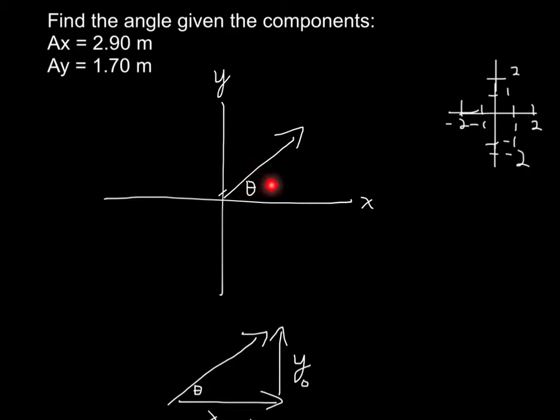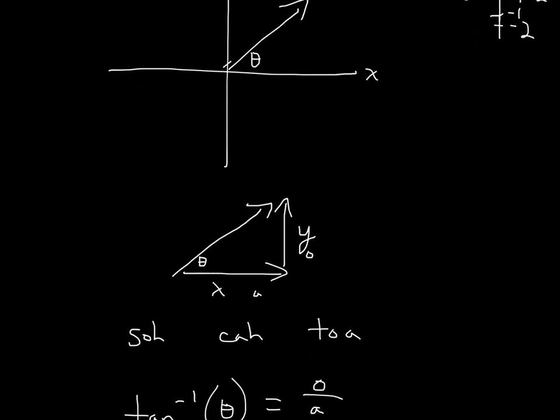So to find this angle, what we can do is we can use trig. So I drew this triangle once more. And so this is the angle. All I did was shift this Y axis component over here to form a triangle.